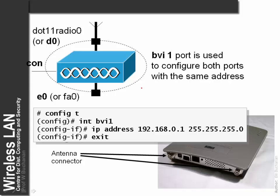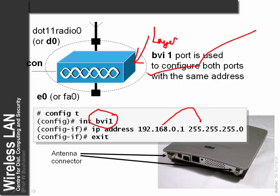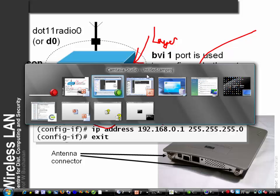Let's look at the basic configuration of the wireless device. As this is a layer 2 device, none of the ports need an IP address. But we need an address to be able to remotely connect to it, so we create what's called a virtual interface called the BVI. The BVI is like an address for all the interfaces and the whole device. We have virtual interface 1 as the default interface and define it with an IP address to be able to contact the device.